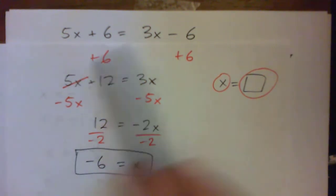So it doesn't matter how you start it. As long as you try to get x's on one side, numbers on the other, you should end up with x is negative 6, right? Right.